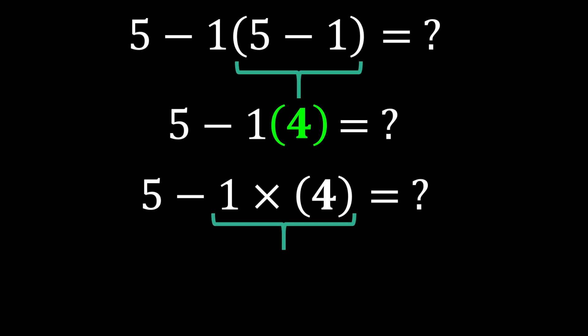In this expression, we now have subtraction and multiplication. Since multiplication has a higher priority than subtraction, we perform the multiplication first. 1 multiplied by 4 becomes 4, and finally, 5 minus 4 gives us 1. The final answer is 1.